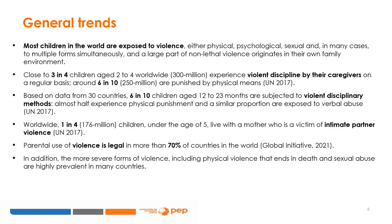It is difficult to generate precise estimates of the prevalence of violence. However, available studies indicate that most children in the world are exposed to violence — either physical, psychological, sexual, and in many cases to multiple forms simultaneously. A large part of non-lethal violence originates in their own family environment. Close to three in four children aged two to four years worldwide — around 300 million children — experience violent discipline by their caregivers on a regular basis, and around six in ten are punished by physical means.